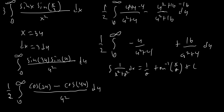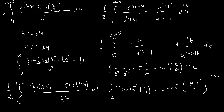We end up with one half times 4·arctan(u/4) minus 2·arctan(u/2), evaluated from 0 to infinity. At infinity both arctangents give pi/2, and at 0 both are zero. So we get one half times (2pi minus pi) = pi/2. That's the second Borwein integral.